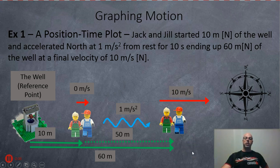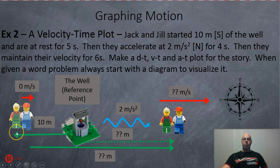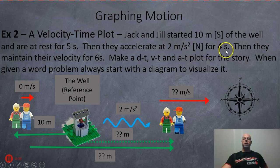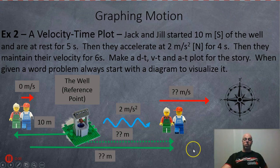For our next example, we'll do the opposite: start with the picture and use the equations to make our graphs — this time a velocity-time plot. Jack and Jill start 10 meters south of the well, are at rest for five seconds, then accelerate at two meters per second squared north for four seconds, then maintain that velocity for six seconds. We'll make a position-time plot and an acceleration-time plot for the story. Whenever you get a word problem, always make a diagram to visualize it — it also counts for communication marks.